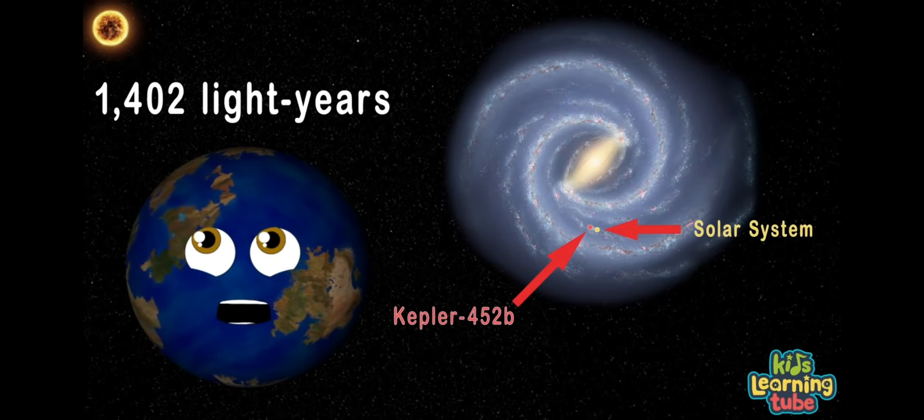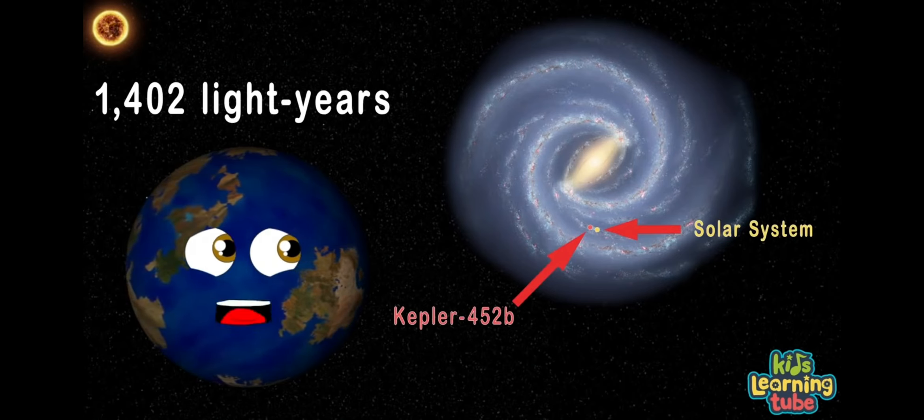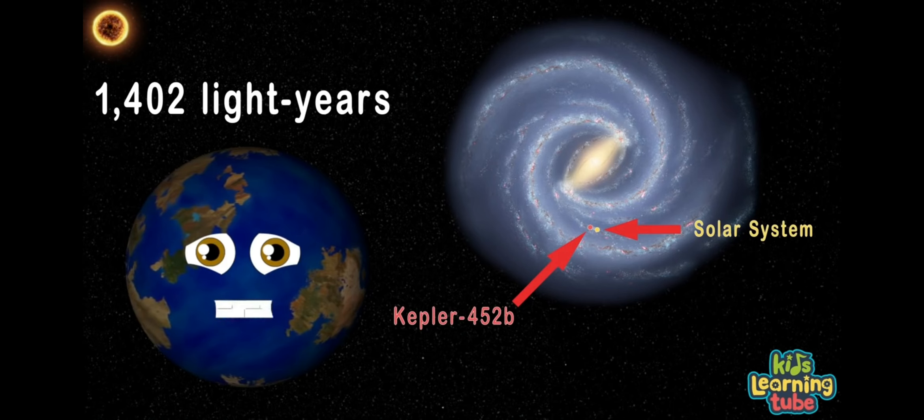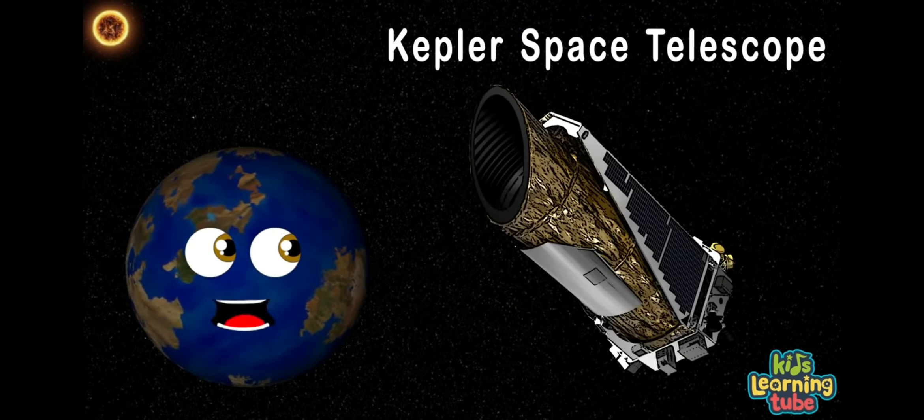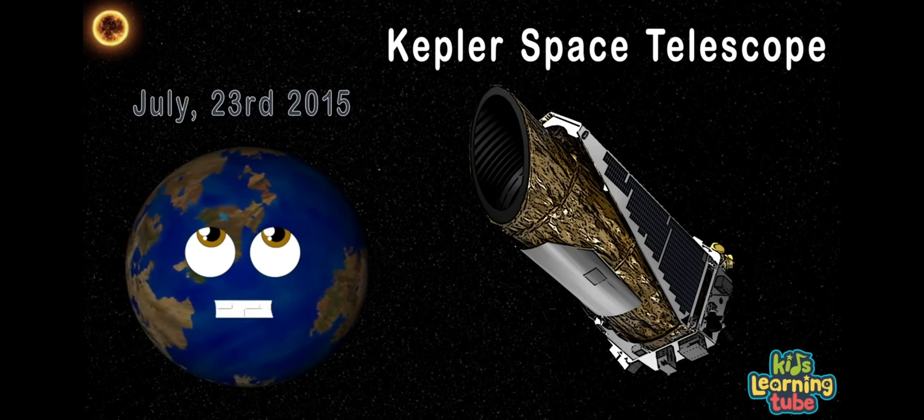Where am I? I'm 1,402 light-years away from the solar system your Earth does play. I was discovered by the Kepler Space Telescope on July 23, 2015 by NASA with hope. Through a study in 2018 by Fergal Mullally, I have not been proven to exist statistically.